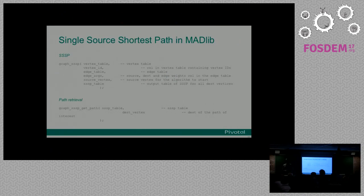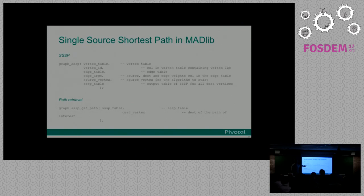The way you call it is in a select statement as well — a declarative built-in function. You call graph SSSP, give it a vertex table, specify the column where your vertex IDs are, provide an edge table, provide the source vertex, and it will generate the shortest path. Then if you want to retrieve a particular path, there's a function to retrieve that path.